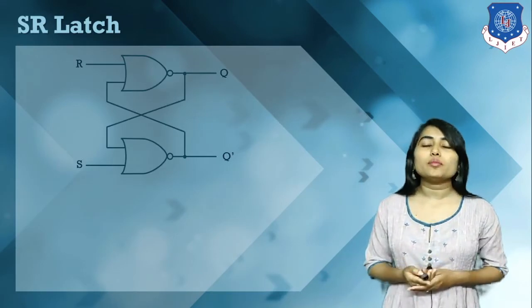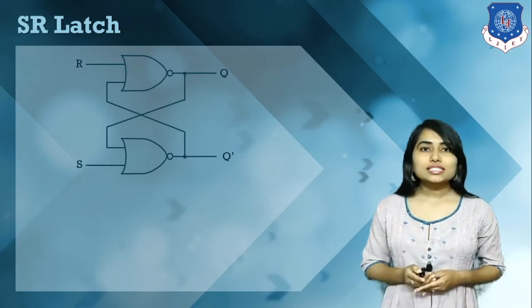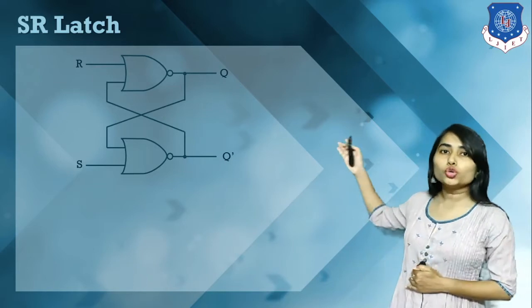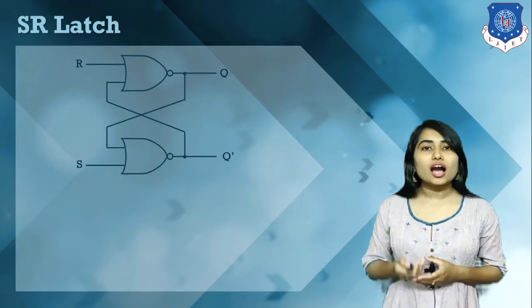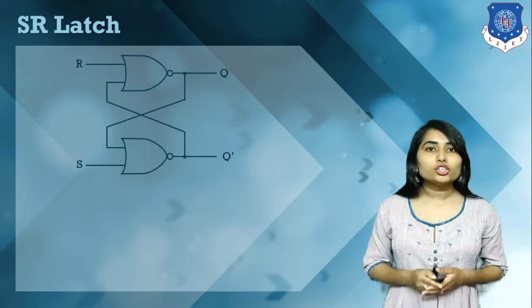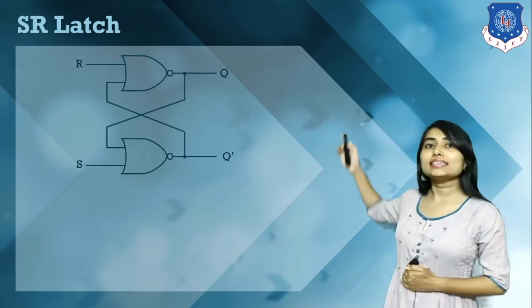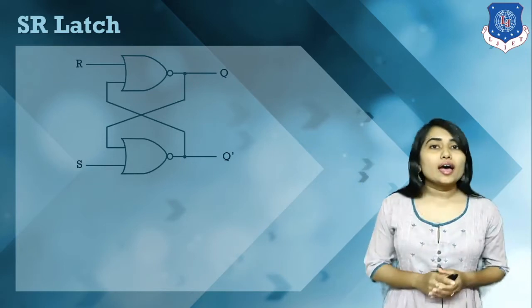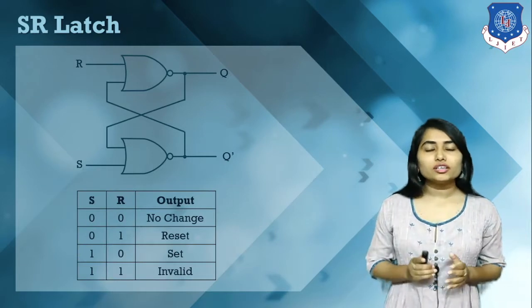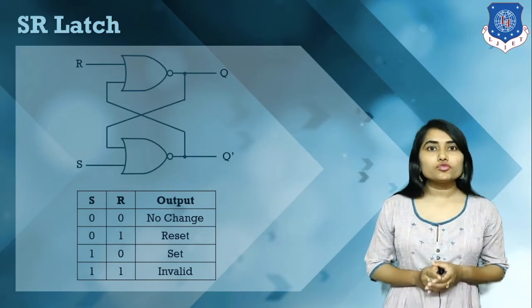Now let's discuss the logical diagram. First, we discuss the active high SR latch — that is, the SR latch using two cross-coupled NOR gates. Here we have two NOR gates, two inputs R and S, and the past outputs Q and Q' are again used as inputs. We also have a characteristic table of the SR latch for NOR gate implementation.